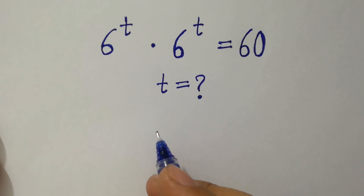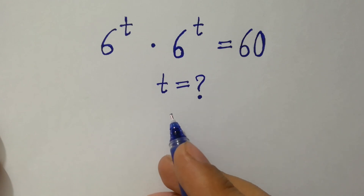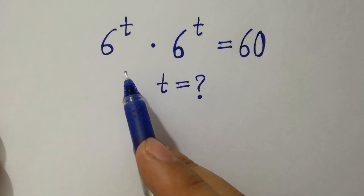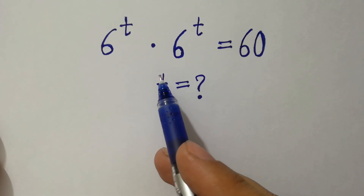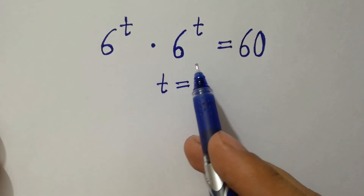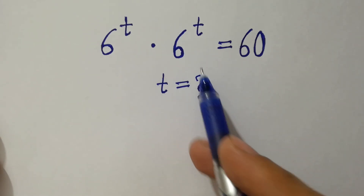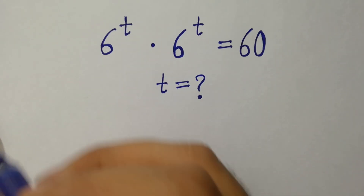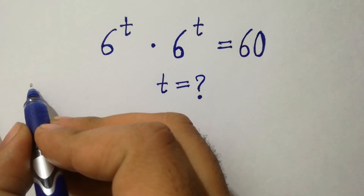Hello friends, find the value of t if 6 to the power t times 6 to the power t equals 60. Let's have a solution.